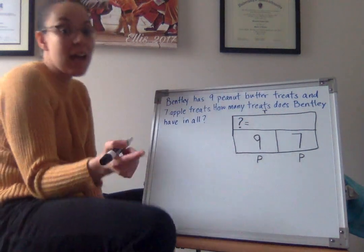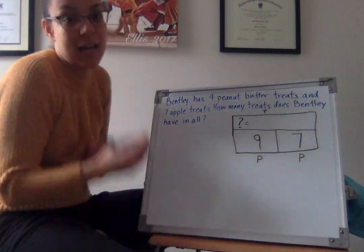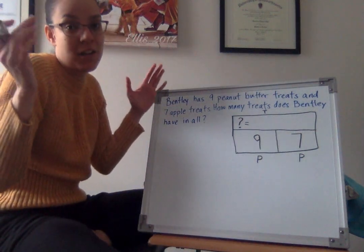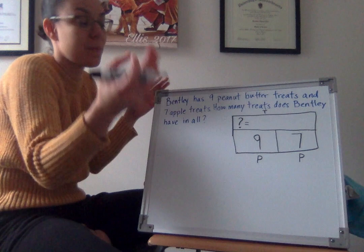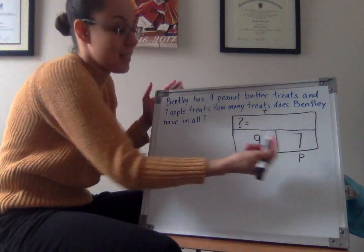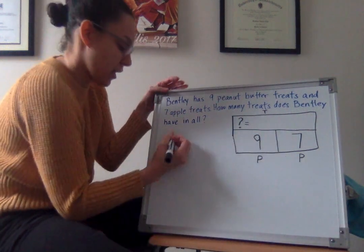But should I count on starting from nine or starting from seven? You guys are so smart. Yeah, I want to start with nine. Because nine is my biggest number. And I know that if I start with my biggest number, then I have to count less to get to the total. So let me start with nine.